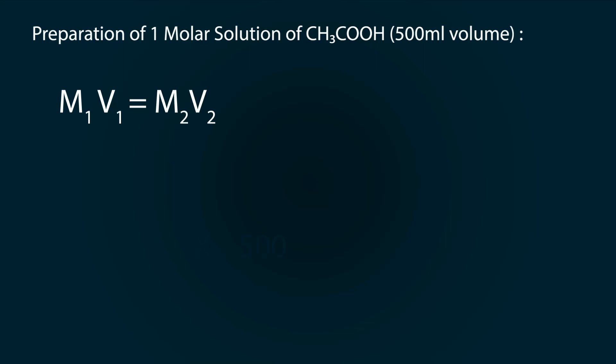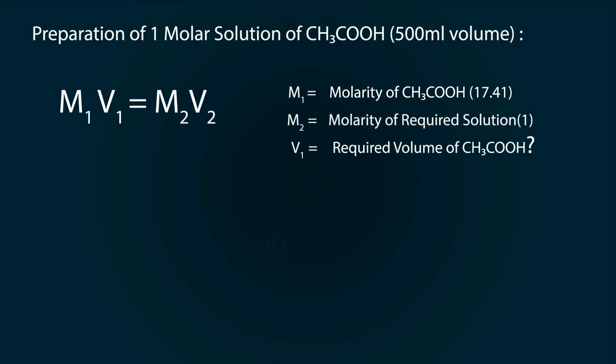Where M₁ is equal to molarity of acetic acid which is 17.41, M₂ is the molarity of our required solution which is 1, V₁ is a required volume of acetic acid of 17.41, and V₂ is our final solution volume